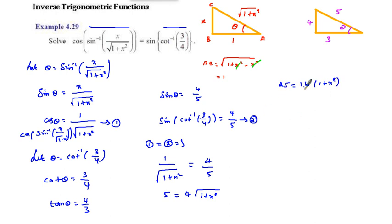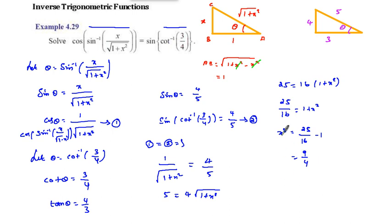From 25 equals 16 times (1 plus x squared), we get 25 by 16 equals 1 plus x squared, so x squared equals 25 by 16 minus 1, which is 25 minus 16 over 16, equals 9 by 16. Taking the square root, x equals plus or minus square root of 9 by 16, which gives x equals plus or minus 3 by 4. This is the answer.